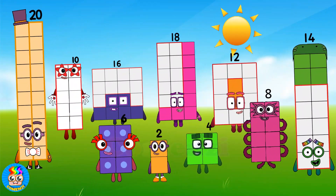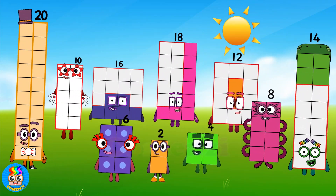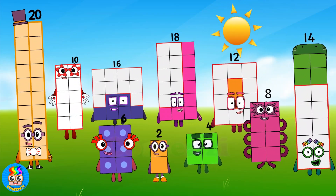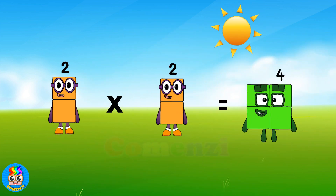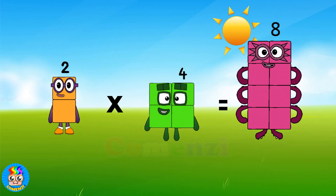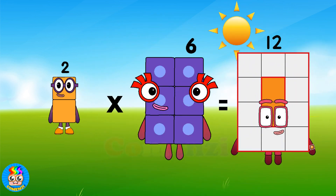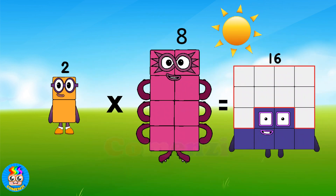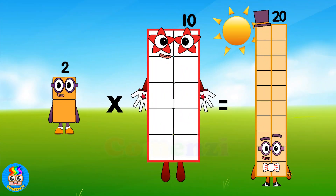Once more. Two times one is two, two times two is four, two times three is six, two times four is eight, two times five is ten, two times six is twelve, two times seven is fourteen, two times eight is sixteen, two times nine is eighteen, two times ten is twenty.